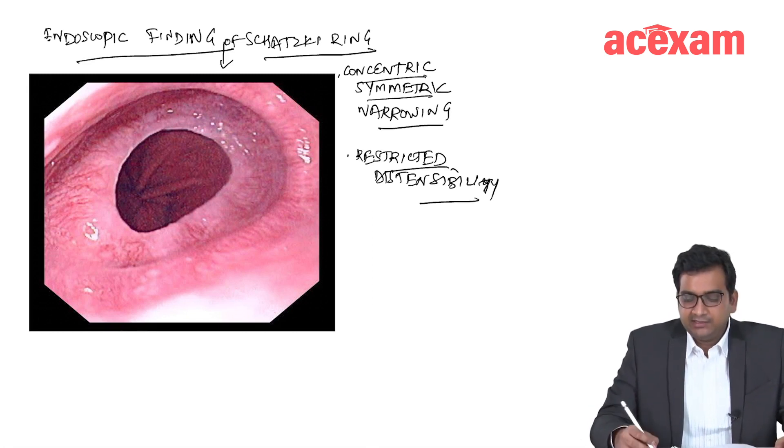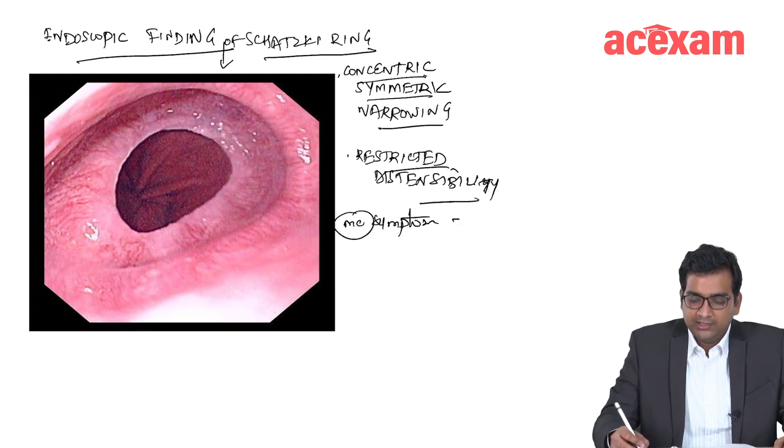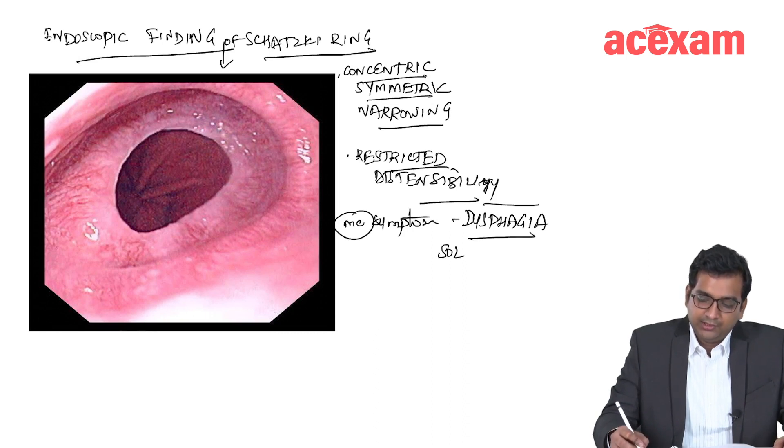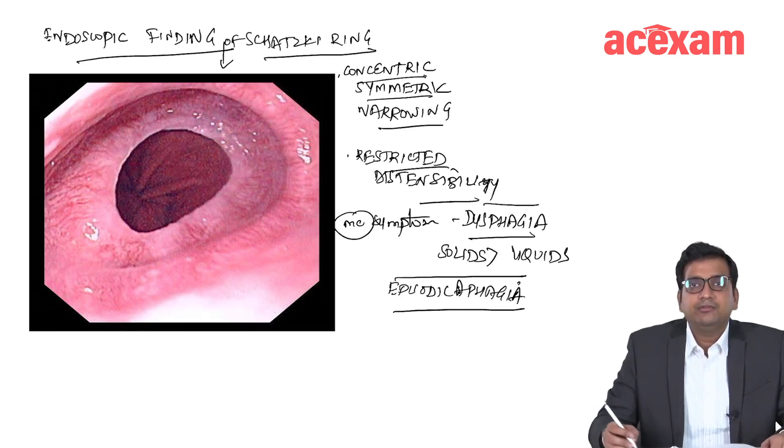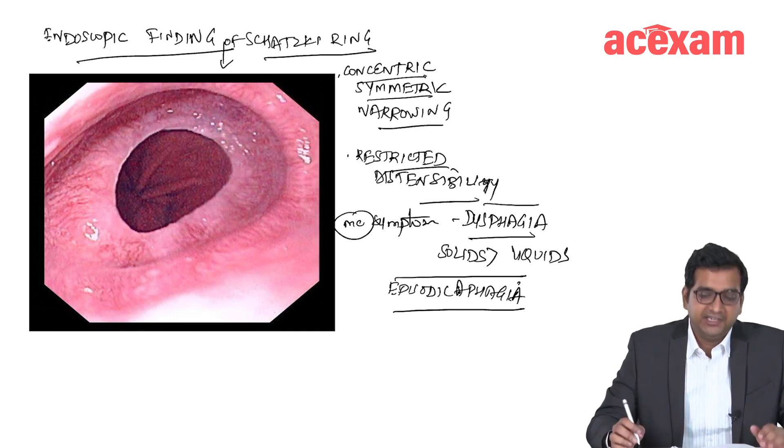The most common symptom in this case is dysphagia, and this dysphagia is more to solids than liquids and there is presence of episodic aphagia where there is presence of complete dysphagia or obstruction due to the presence of large piece of meat or non-vegetarian food.